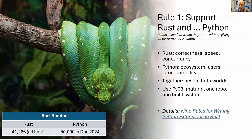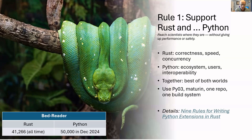Rule one: I want to encourage you to support not just Rust when you create a scientific library, but also Python. We know why we have Rust — correctness, speed, and concurrency — but Python is where the scientists are. If you want to have the biggest impact, be sure to include Python. To quantify this: Bedreader's all-time downloads in Rust are about 41,000, while in a good month the Python version of Bedreader — which calls the Rust version — gets 50,000. By putting them together, you really do get the best of both worlds.